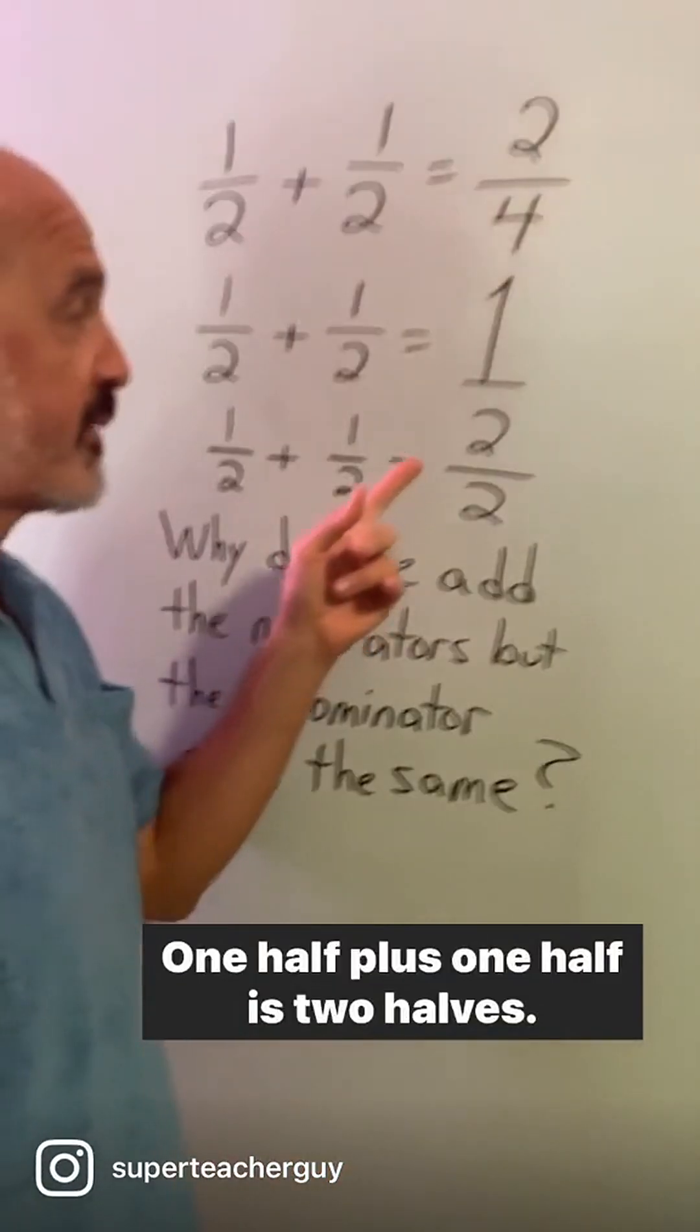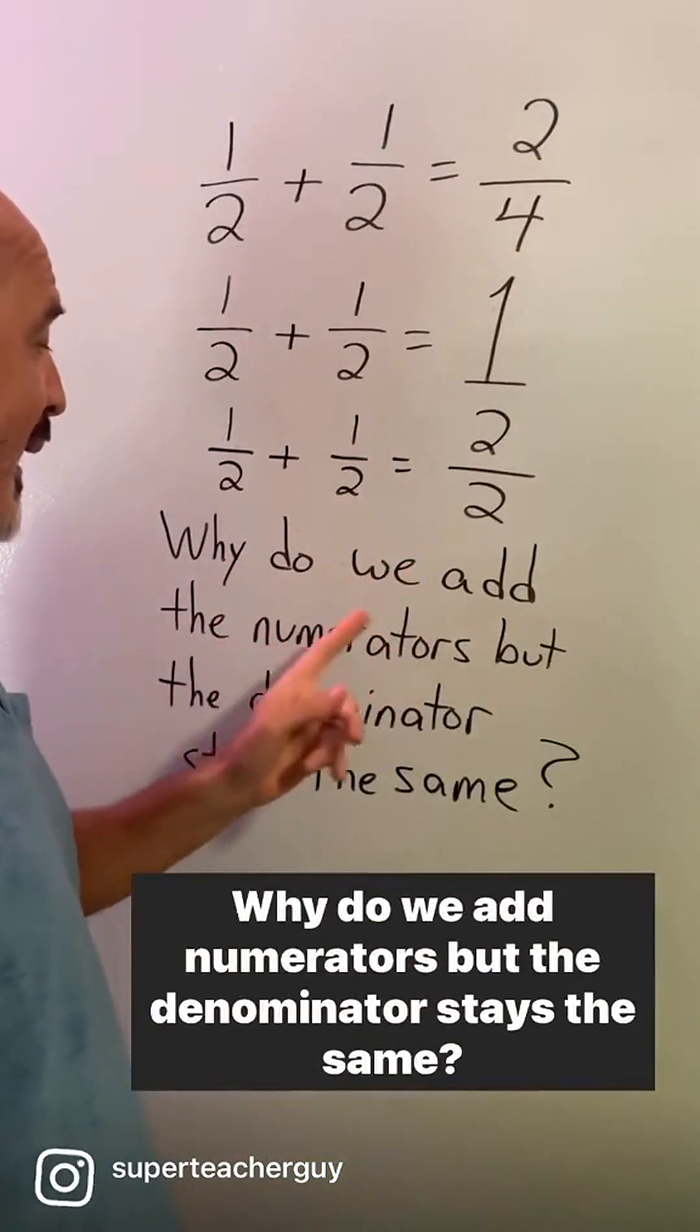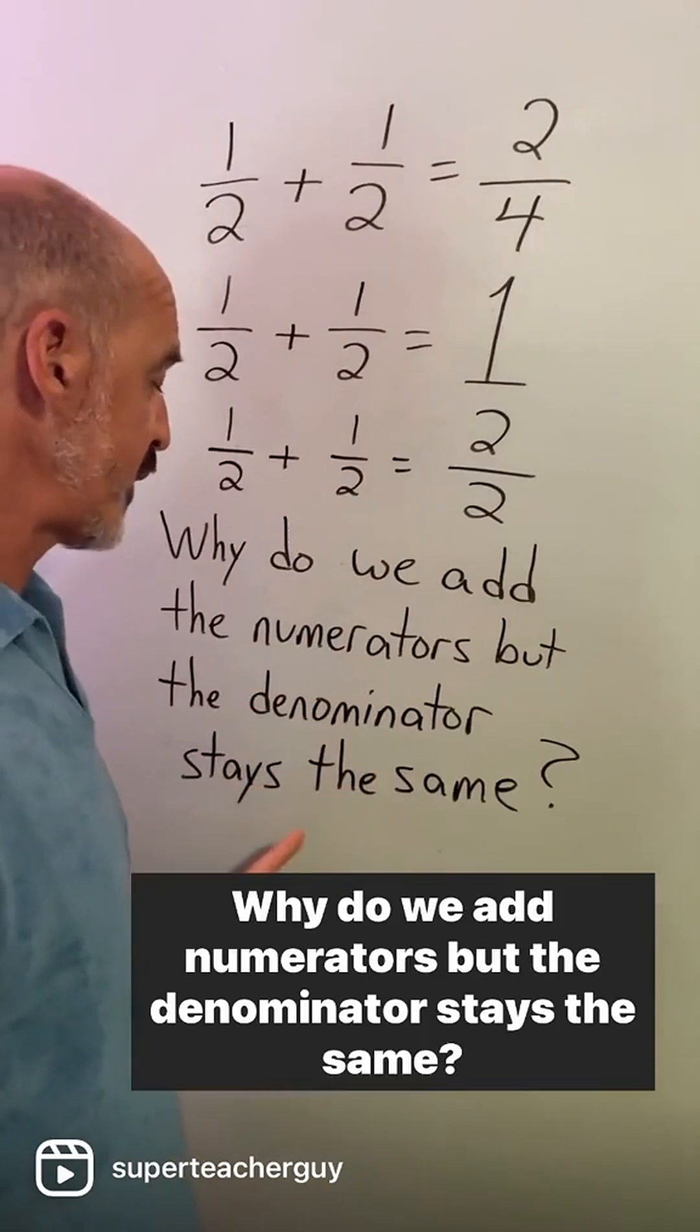One half plus one half is two halves. Why do we add the numerators but the denominator stays the same?